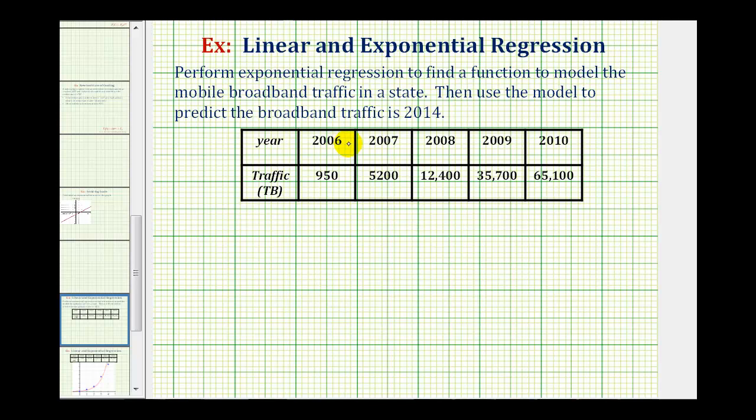Looking at the table, notice how the first year given is 2006. This is the base year and instead of using the entire year as the input, we normally let the base year be the input of zero. Then since the year is increased by one, we would have zero, one, two, three, four as the inputs.